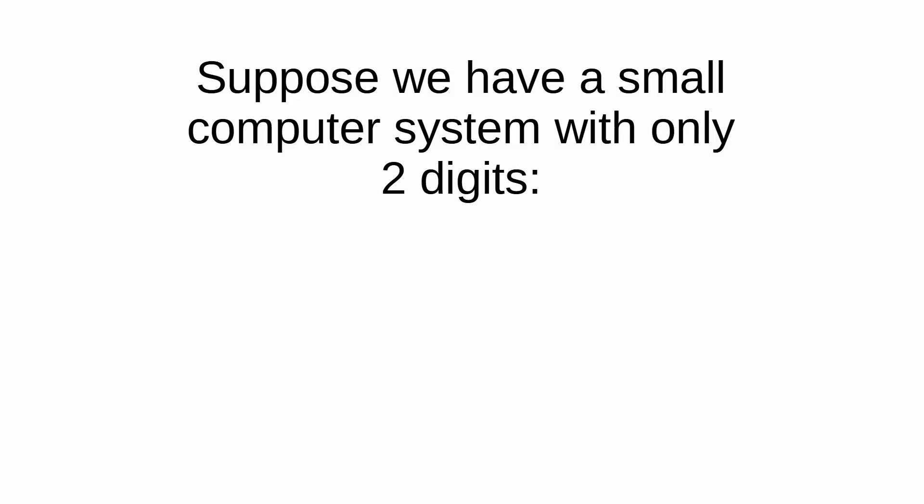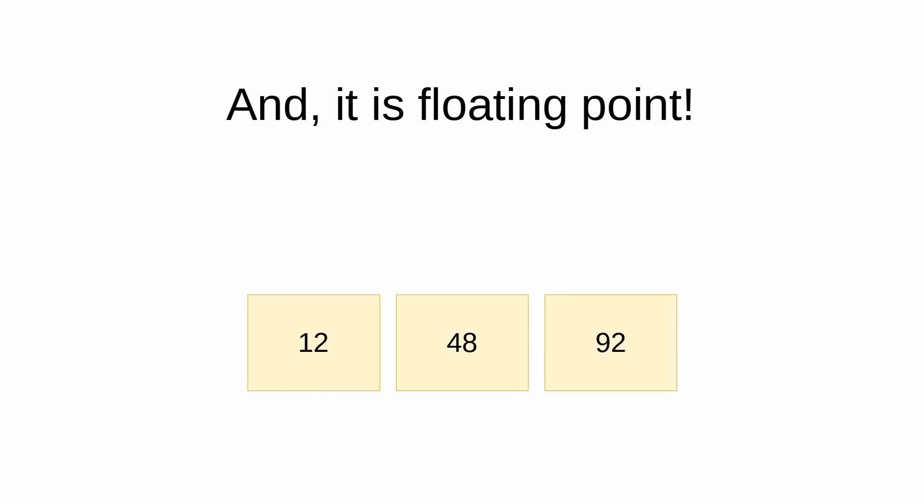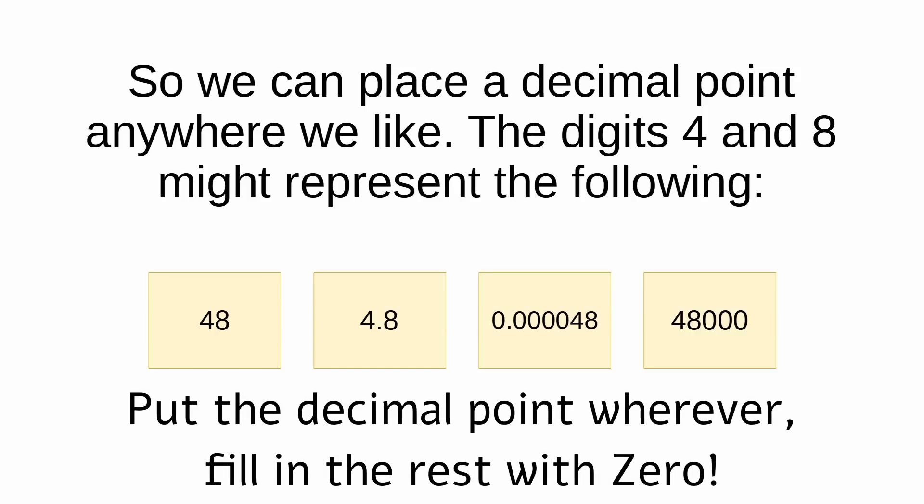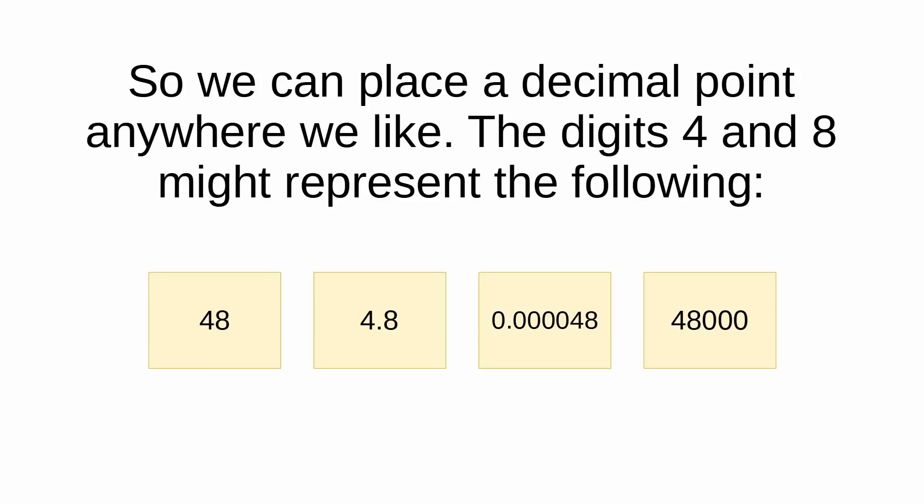Okay, suppose that we've got a small computer system, and the data in this system only has two decimal digits. So we could store the number 12, for example, or 48, or 92, so long as it's only two digits. Let's also suppose that the system is floating-point. So we get to put a decimal point anywhere we like. But the important thing is that there's only two decimal digits, and they're always together.